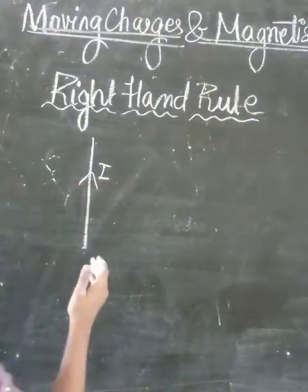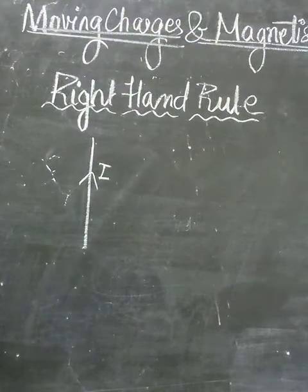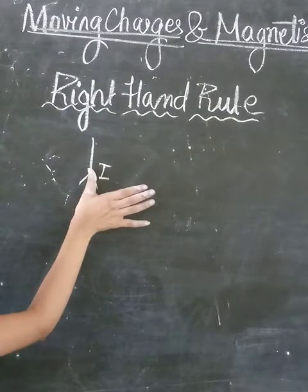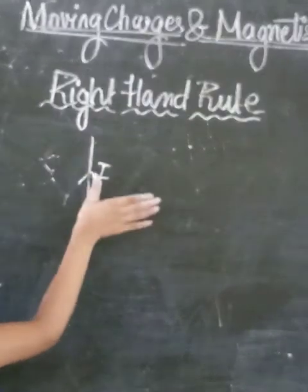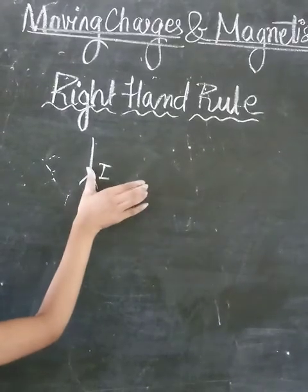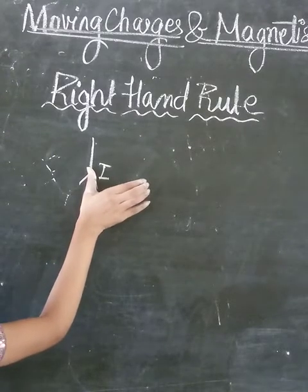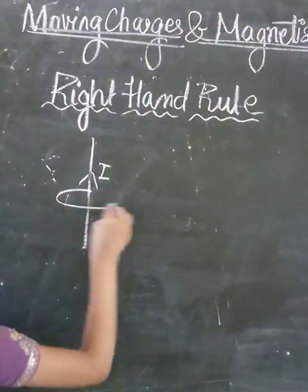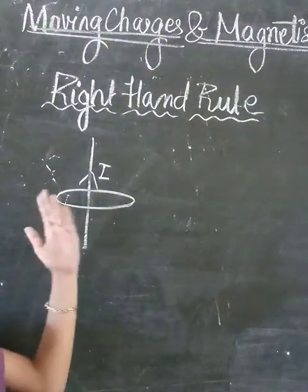In this conductor, the current is moving from bottom to top. So we put the thumb finger in the direction of the current. The curl fingers then show the direction of the magnetic field — they are moving inward, that is, into the plane of the paper. The curl of the fingers shows the inward direction of the magnetic field.